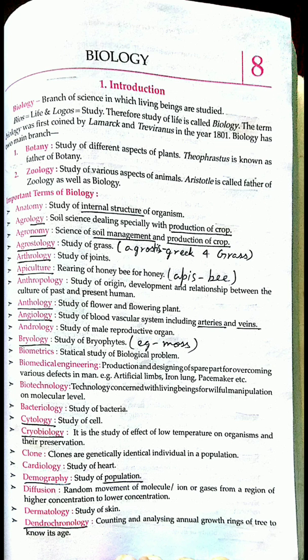You have heard the term arthritis — arthritis is the pain or swelling of joints, which is mainly seen in older people. Similarly, arthrology is the study of joints. Apiculture is the study and rearing of bees — 'madumakhi,' the honey bee.